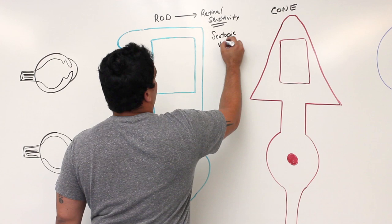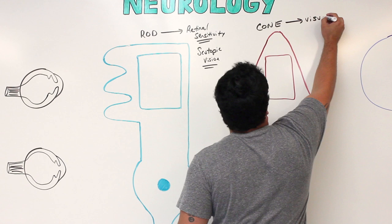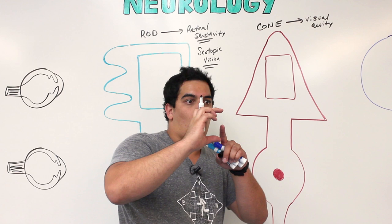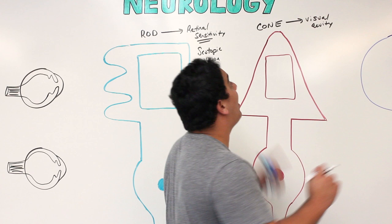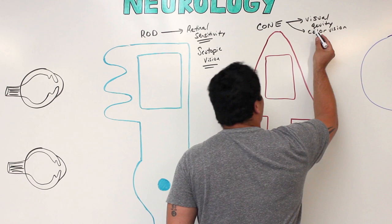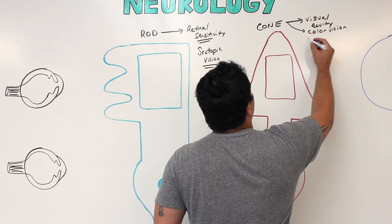Cones are very important for visual acuity — very specific, precise, edge-detecting vision — being able to determine the shapes of objects, whether something is square or circular. Cones are also important for color vision, responding to blue, green, and red wavelengths. This type of vision — color vision and visual acuity in bright conditions — is called photopic vision.